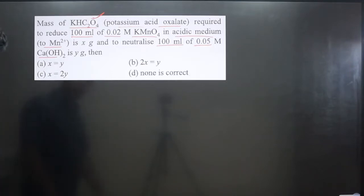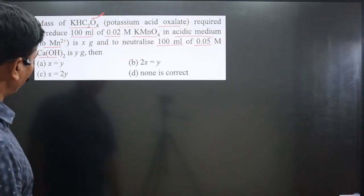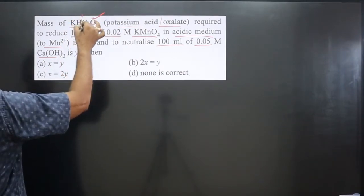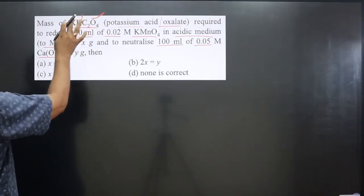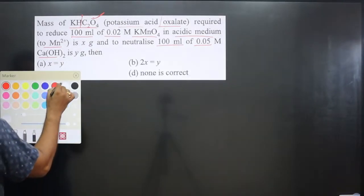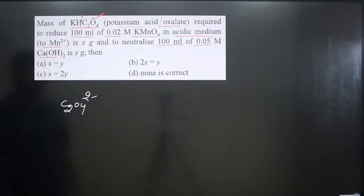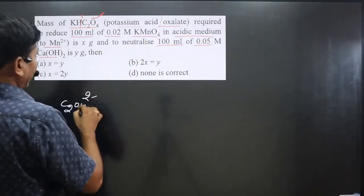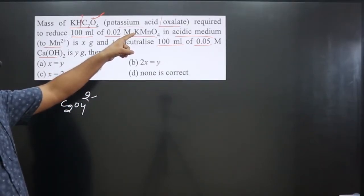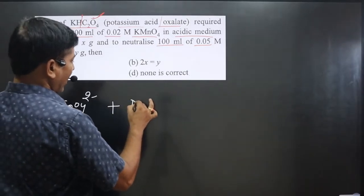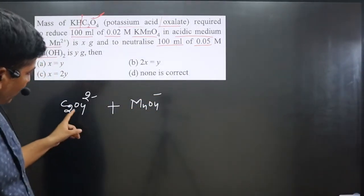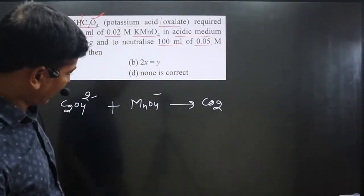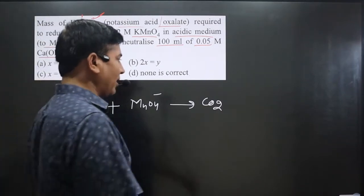First we focus on the reaction with KMnO4. From potassium acid oxalate KHC2O4, we can get the oxalate ion: H⁺ is +1, K⁺ is +1, so the oxalate ion C2O4²⁻ is 2 minus. Removing the spectator ion K⁺, we get permanganate ion MnO4⁻. Oxalate ion undergoes oxidation and always converts into CO2. MnO4⁻ in acidic medium always converts into Mn²⁺, as given in the question.